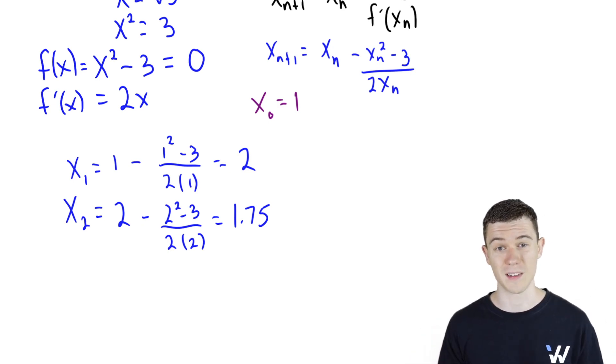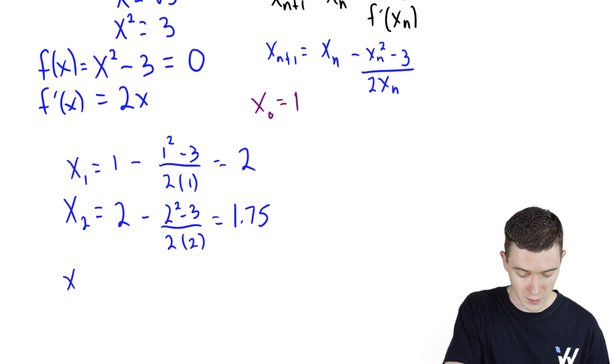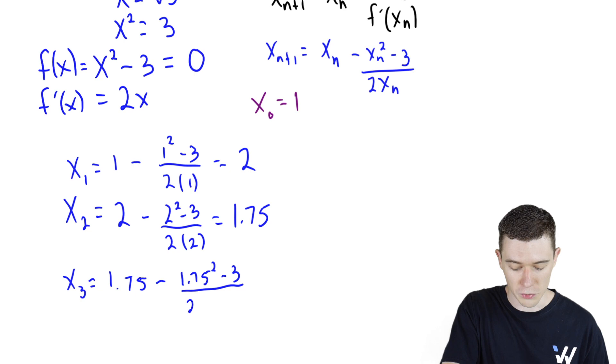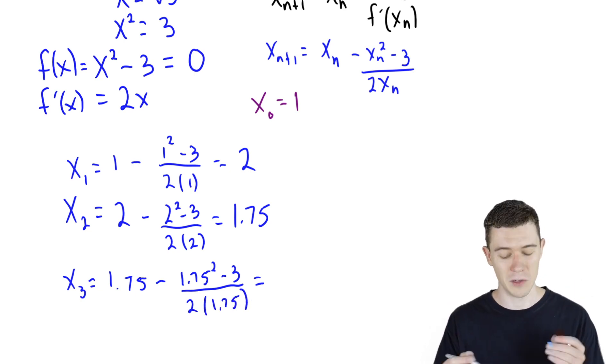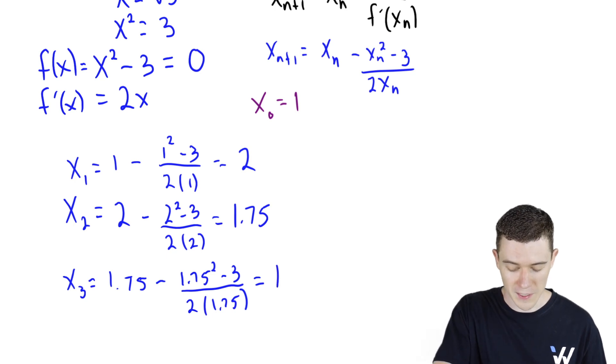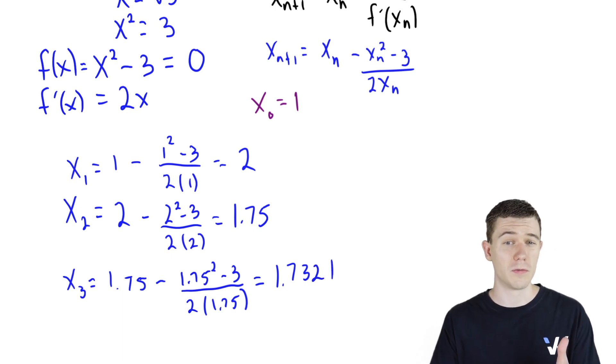That's what we're going to plug in to find x sub three. x sub three is one point seven five minus our function evaluated at one point seven five over the derivative at one point seven five. And now almost certainly here you would have to use a calculator. I'll spare you the details. This is one point seven three two one. And here we're only looking to four decimal places, so I won't go any farther than that.